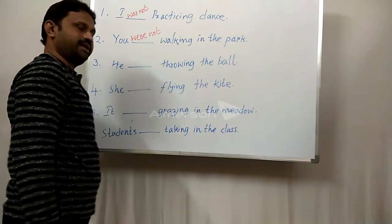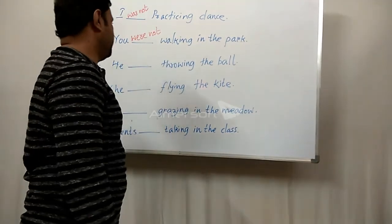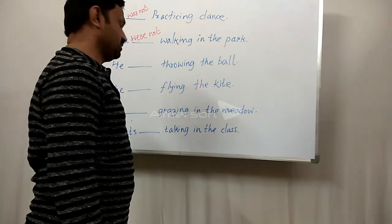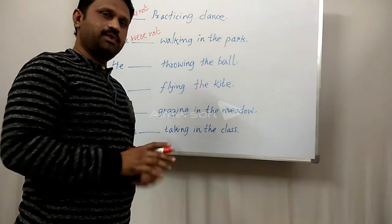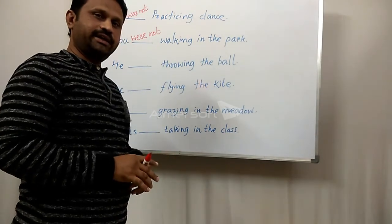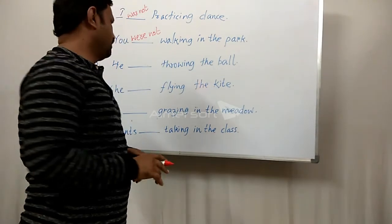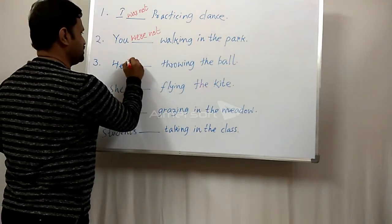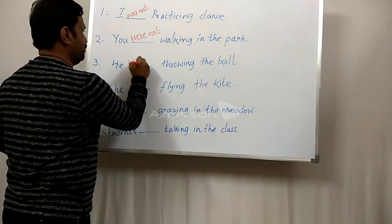Third sentence: 'He dash throwing the ball.' 'He' is third person and takes 'was.' So the answer is: 'He was not throwing the ball.'